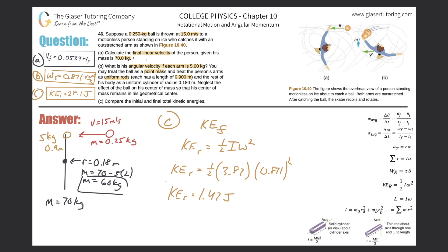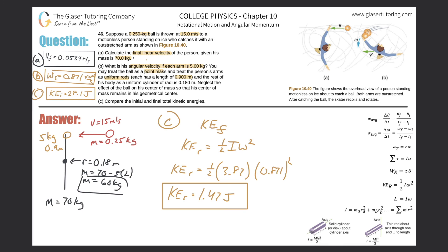To compare: you can take the ratio of final to initial kinetic energy — 1.47 divided by 28.1 — to see how much kinetic energy remains in the rotational case compared to the original linear case. Thanks for tuning in, hope this helped — please remember to subscribe.